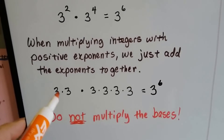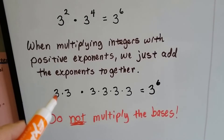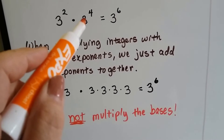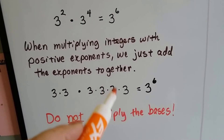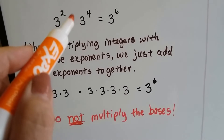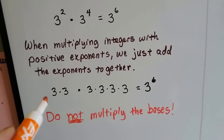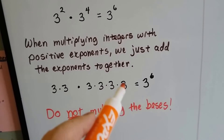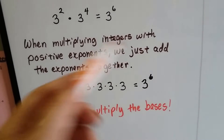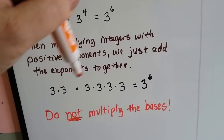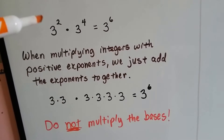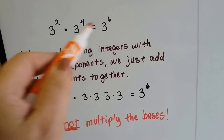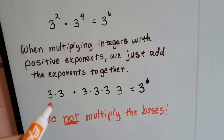Here's why: if we have 3 to the second power, that means we've got 3 times 3. And if we've got 3 to the fourth power, that means 3 times 3 times 3 times 3. If we're multiplying them together, that just means we've got 3 times 3 times 3 times 3 times 3 times 3 — that's 3 to the sixth power. All we're doing is adding up how many 3's we've got. Because the bases are the same, we're just adding a couple more to that exponent of 4 and making it a 6.